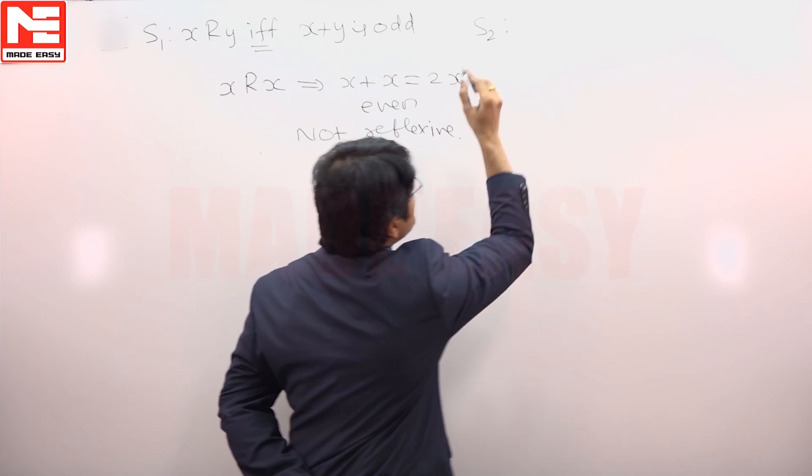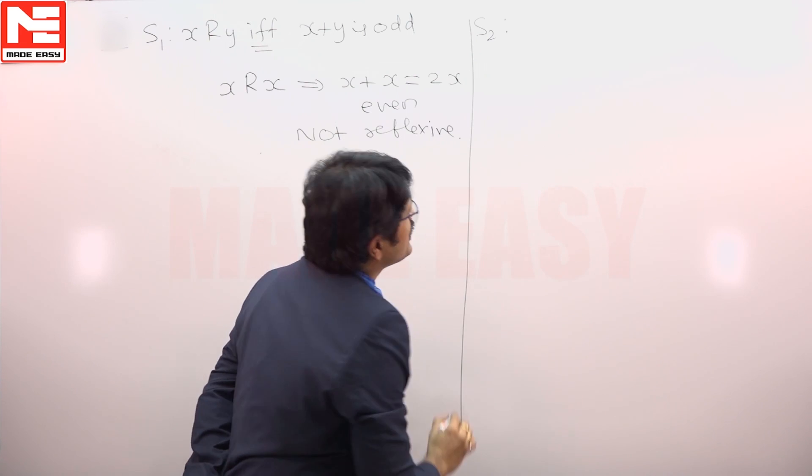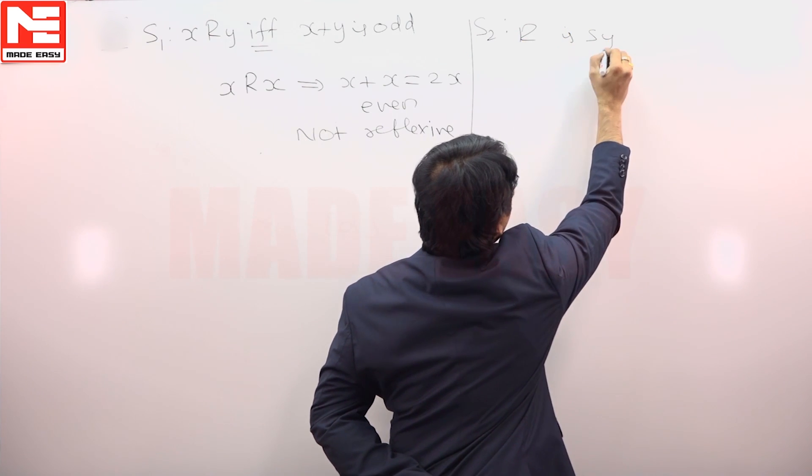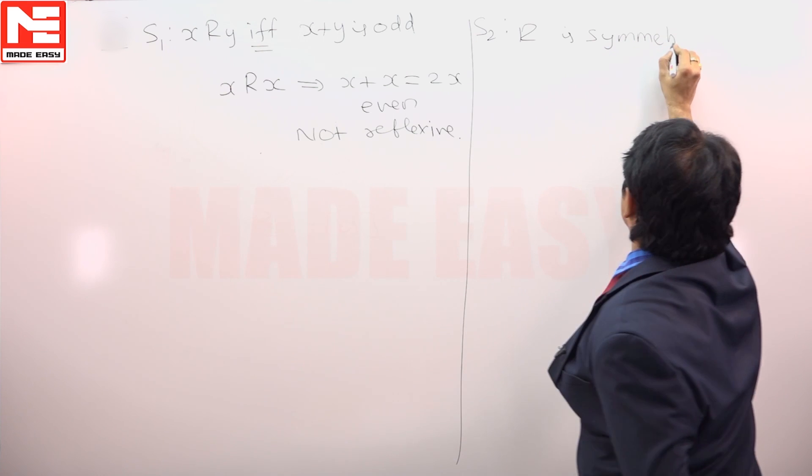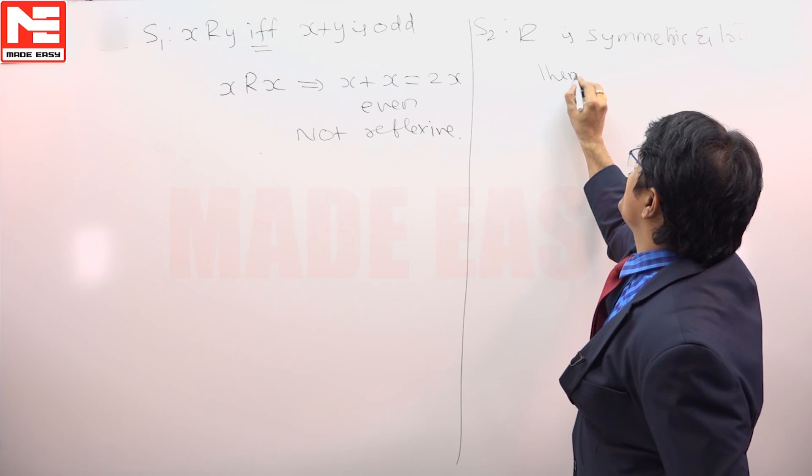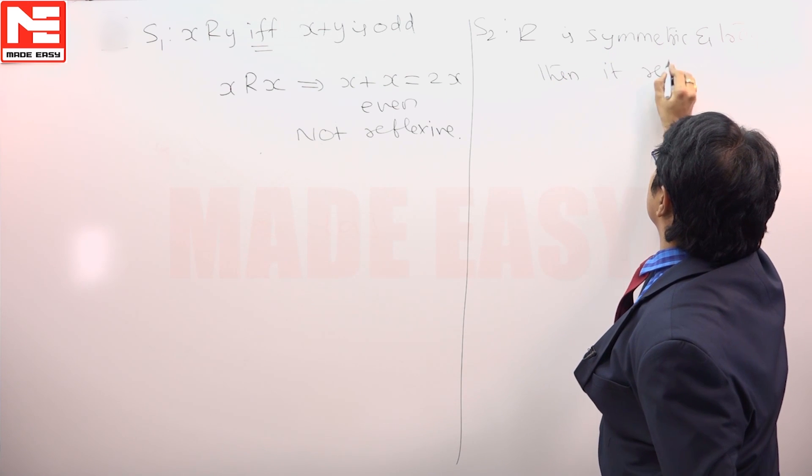Now, if you see S2, the statement says if a relation is symmetric and transitive, then it is reflexive.